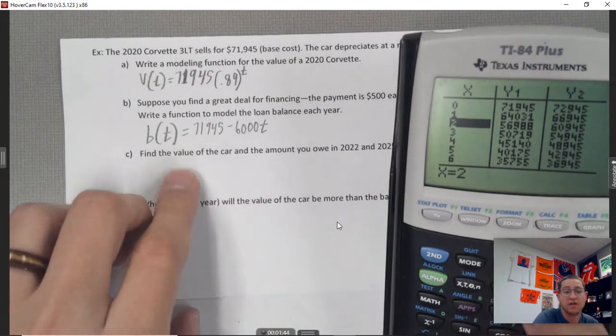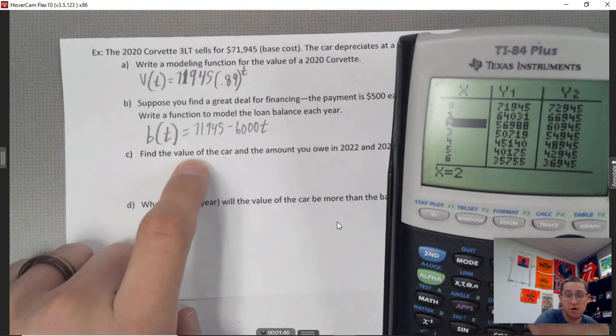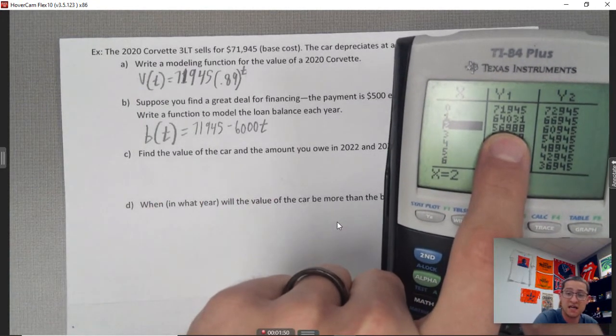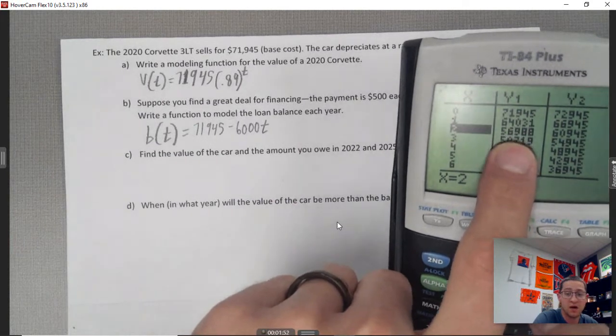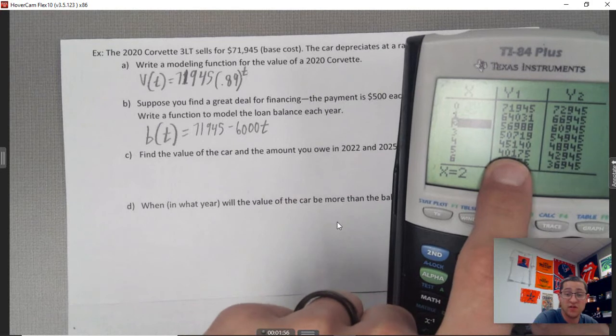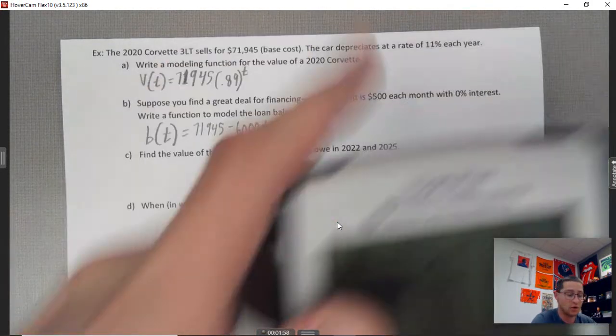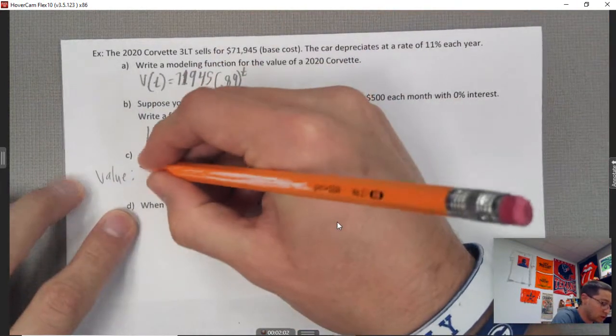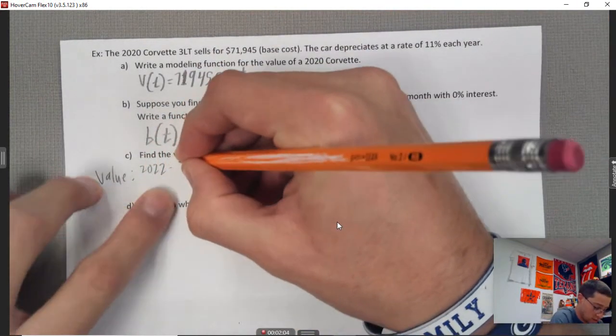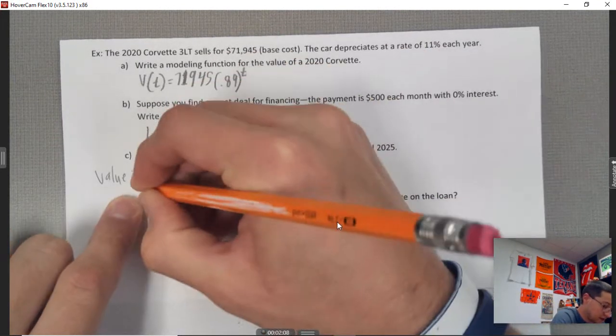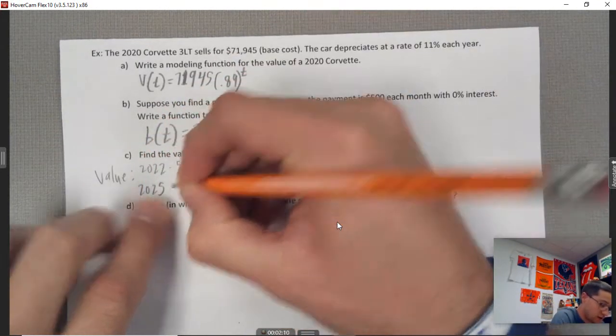sorry, find the value of the car is the first part. So the value of the car would be $56,988, again plugging it into the table. And then 2025 - that would be five years later, so $40,175. So I'll go ahead and say: value in 2022 was $56,988; in 2025 it was $40,175.